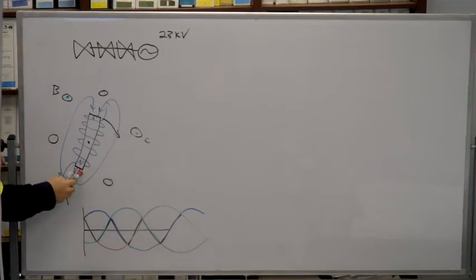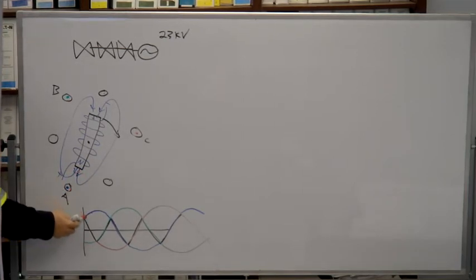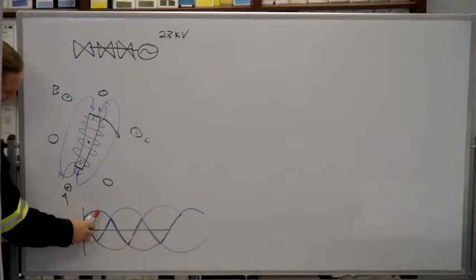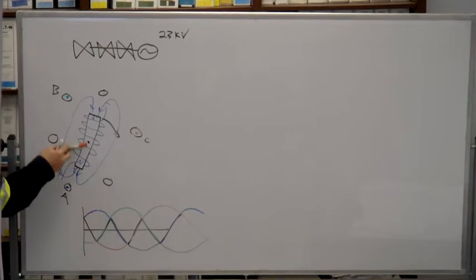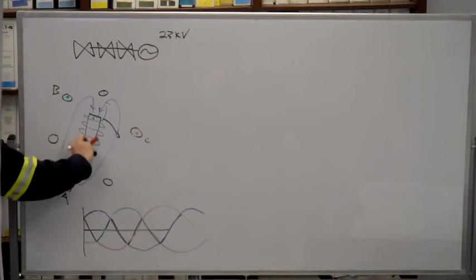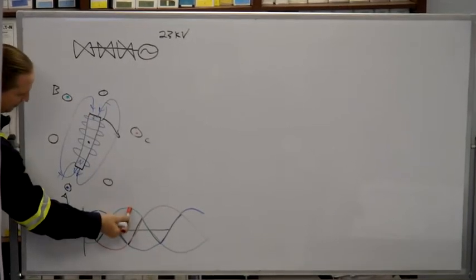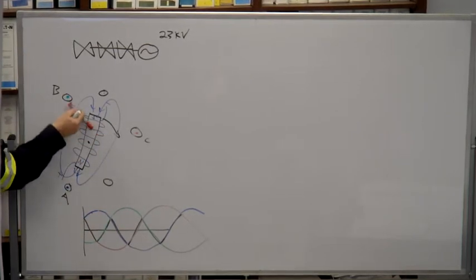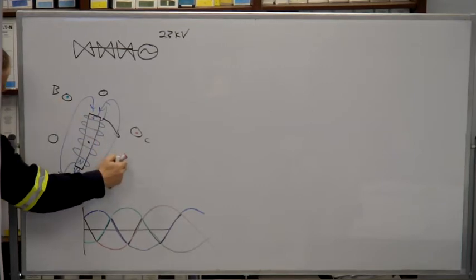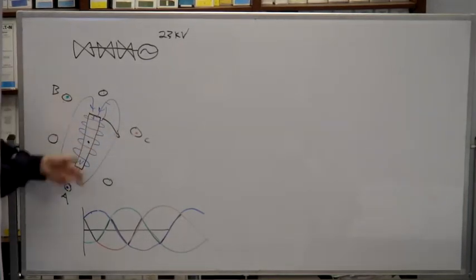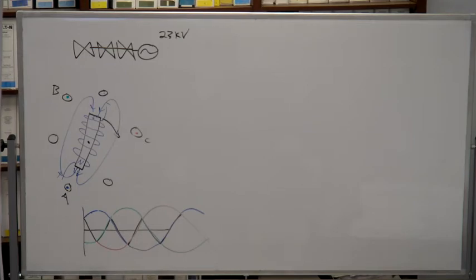So when the north end of the magnet is by the A conductor, then it is at a max positive. And as it turns clockwise, then the alpha voltage is going to be going down, and the bravo voltage is going to be coming up. And then when it gets to here, the bravo is the maximum, and the charlie is negative but getting less negative because the south moves away from it.